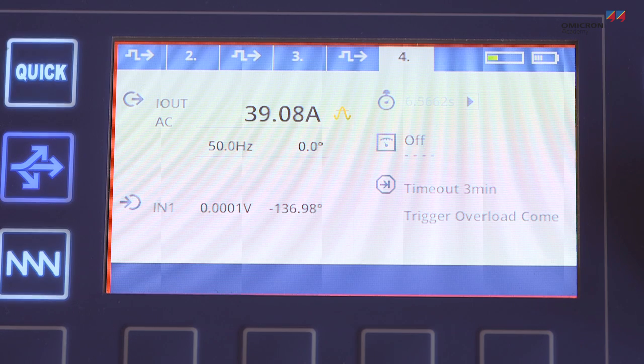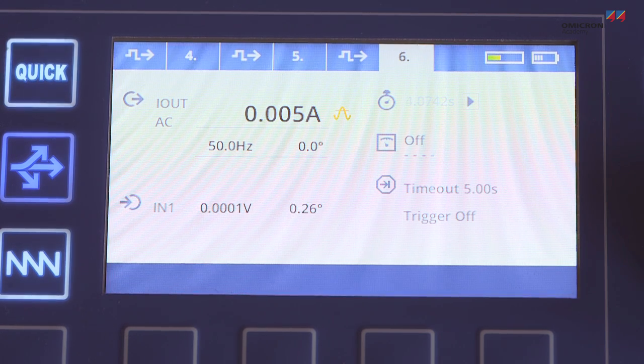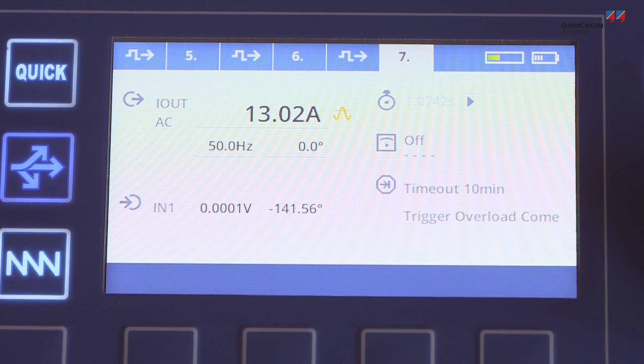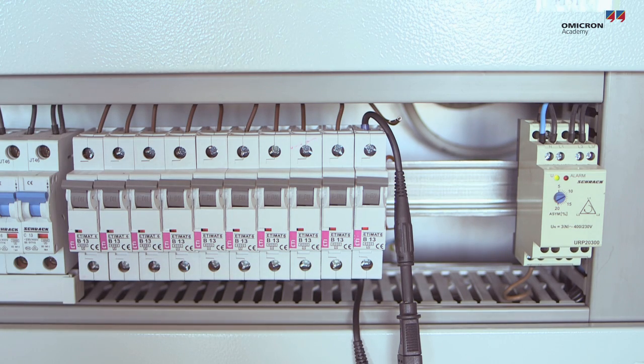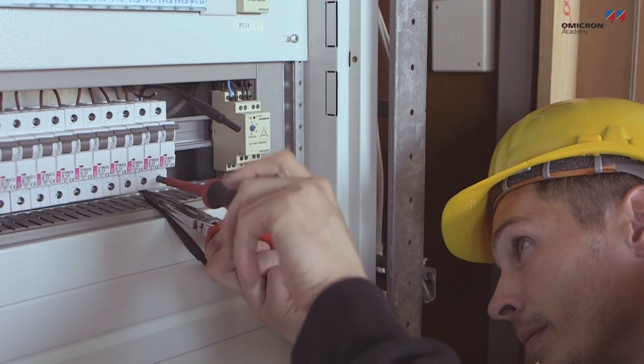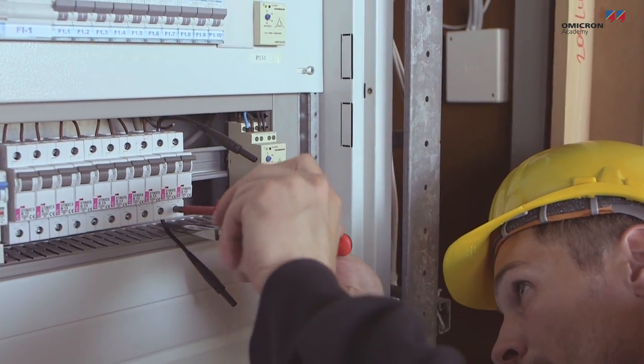The overload tripping element is tested next. A stability test with nominal current completes the test for this MCB. This one is working fine. And now, on to the next one.